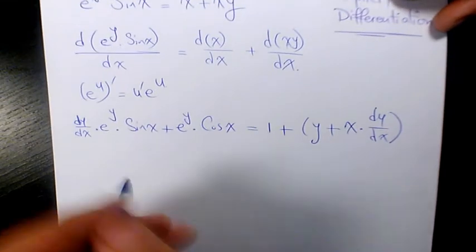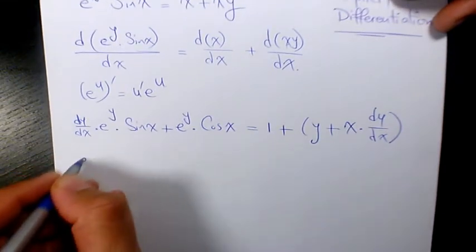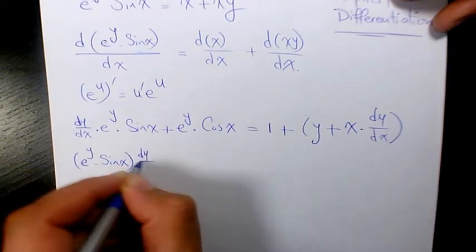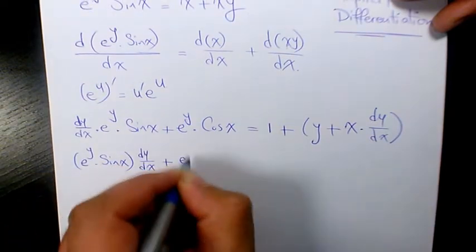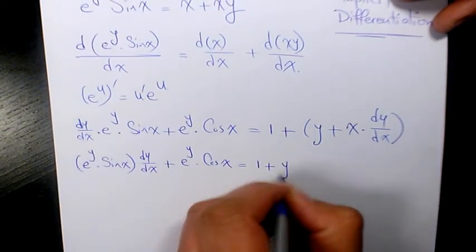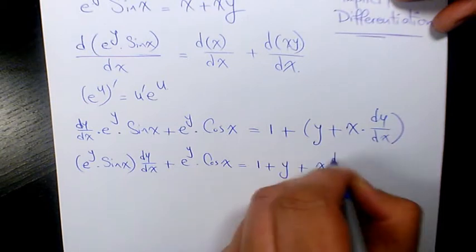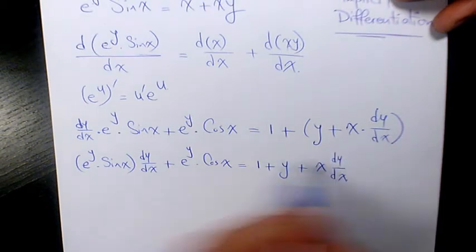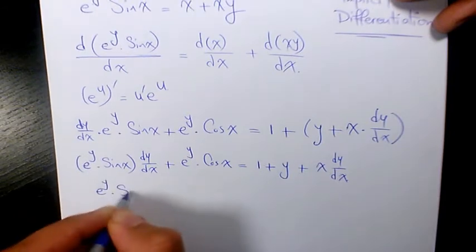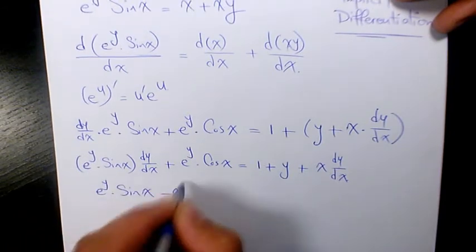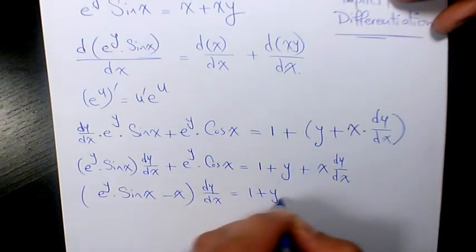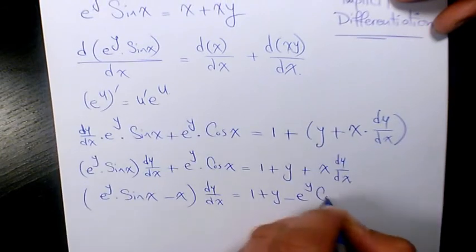Simplifying, we have e^y times sine x times dy/dx plus e to the power of y times cosine x equals 1 plus y plus x times dy/dx. Moving the dy/dx terms to the left side gives e to the power of y sine x minus x times dy/dx equals 1 plus y minus e to the power of y cosine x.